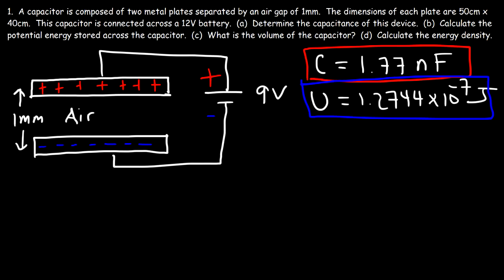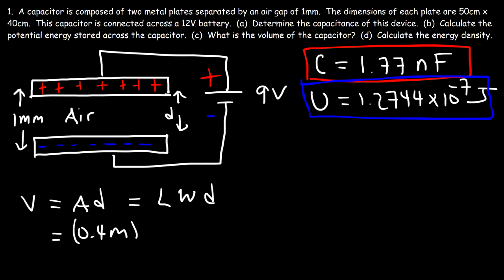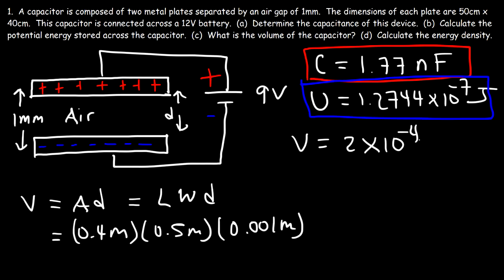Now part C: what is the volume of the capacitor? The volume is the area of the capacitor times the separation distance D. The area is length times width, so the volume is length times width times height. That's 0.4 meters times 0.5 meters for the plate area, since the plates are 40 centimeters by 50 centimeters, times the separation distance of 1 millimeter, or 0.001 meters. So 0.4 times 0.5 times 0.001 gives us a volume of 2 times 10 to the negative 4 cubic meters. That's it for part C.